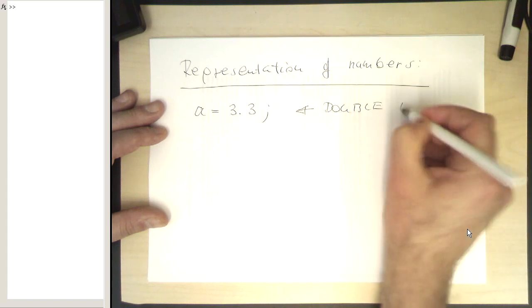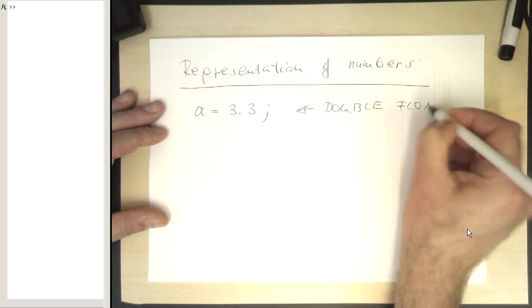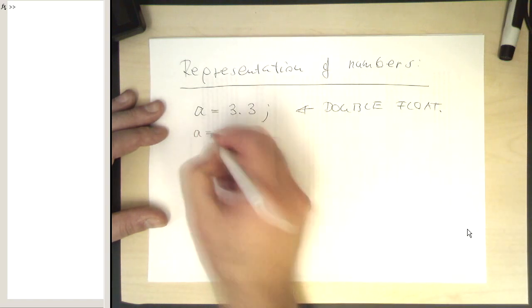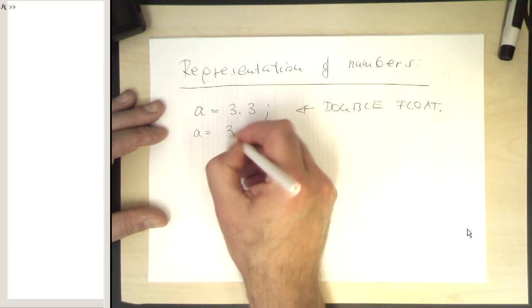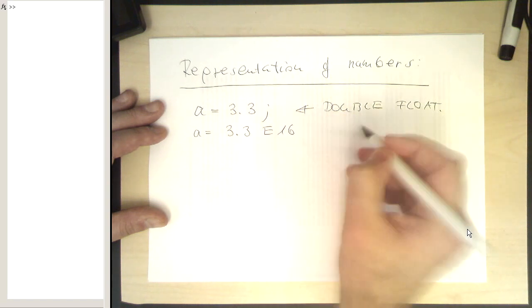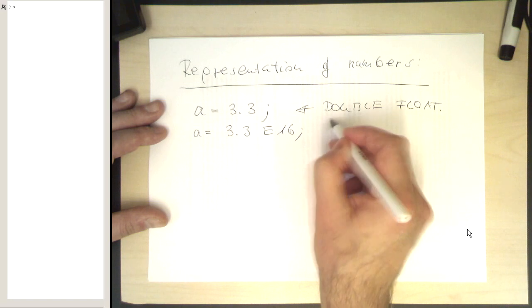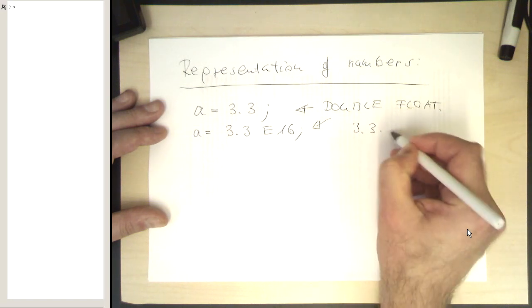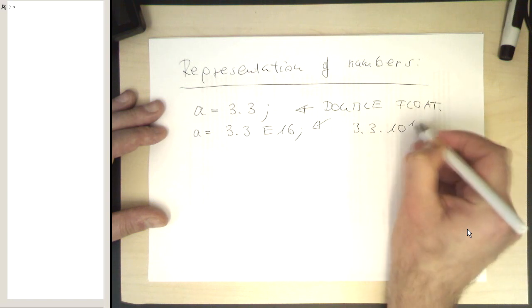A double floating point. And for this reason we can also write, for example, 3.3e16. That's also a double floating point and is 3.3 multiplied by 10 to the 16.